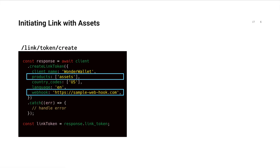Next, I'll show you how the front-end integration works. Like all of Plaid's products, Plaid Link is the front-end module required to allow a user to connect their bank account to your application. To kick off the assets work stream, simply include assets in the product parameter in your link token create call, and Link will take care of the rest for you.